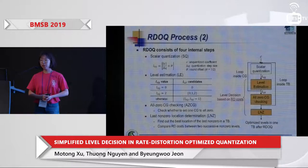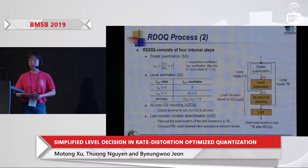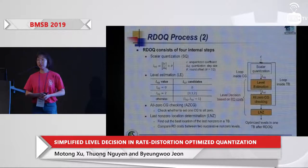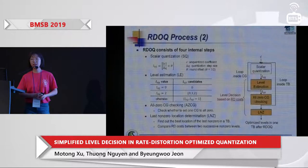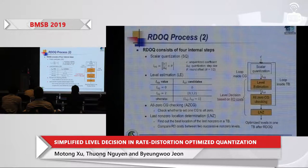The RDOQ function basically consists of four internal steps: scalar quantization (SQ), level estimation (LE), all-zero CG checking (AZCG), and last non-zero location determination (LNZ). First, RDOQ calculates the scalar quantization level L_SQ: the unquantized coefficient c is divided by a quantization step size, then a round offset of one-half is added, and the floor operation is taken.